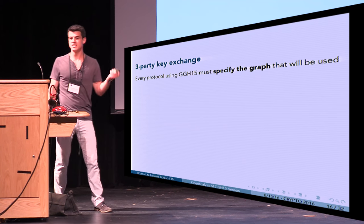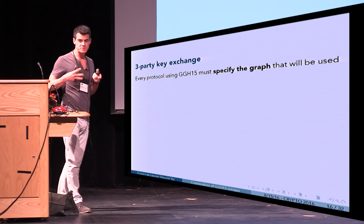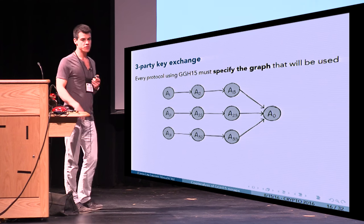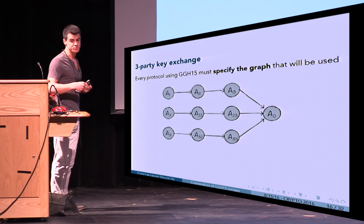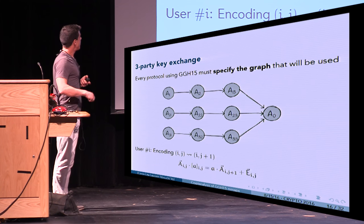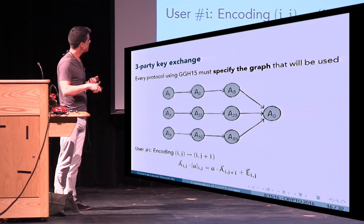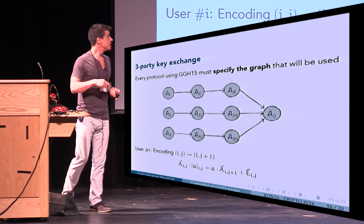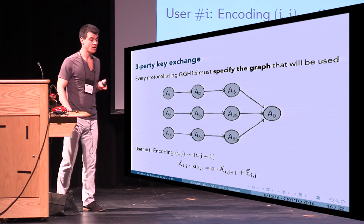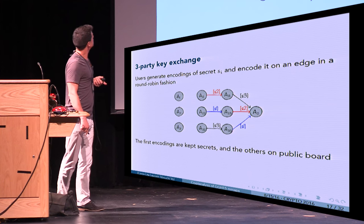What is the key exchange protocol? I'll describe it for three parties, but the attack extends to more. When using GGH15 in an application you must specify the graph. The first row corresponds to user one, the second to user two, the third to user three. An encoding c_ij is such that a_ij times the encoding, times a_{ij+1} plus a noise vector, gives a small result — so encodings sit on the edges.